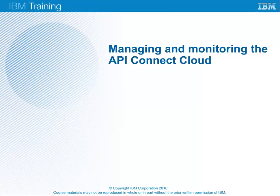The demonstration that you are about to see shows you how to manage and monitor the API Connect Cloud for an on-premises installation of the IBM API Connect Version 5 product. The demonstration is part of course WD502, Manage, Monitor and Subscribe APIs with IBM API Connect Version 5. For more information about this course and other related courses, see the IBM training website at ibm.com/training.